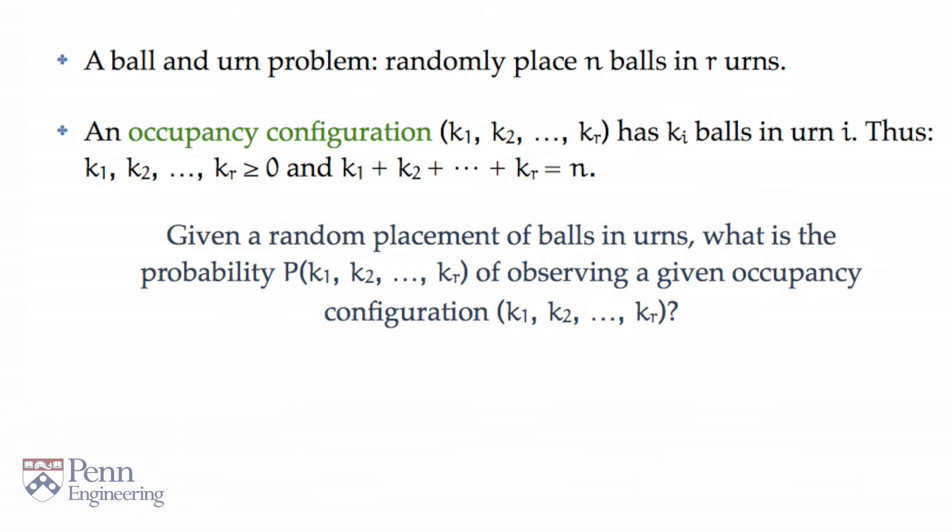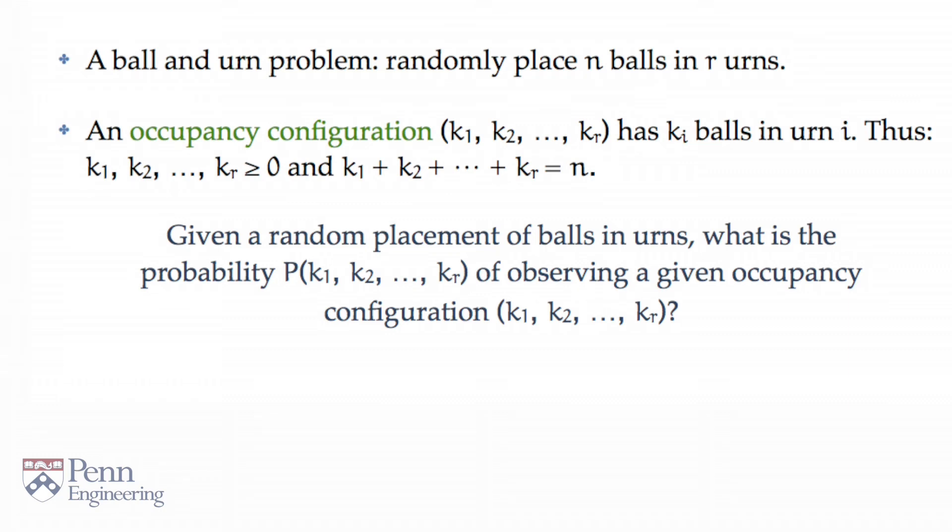So, given a random placement of n balls, n particles, into r urns, r states, and given a particular occupancy configuration of interest to us, say, a particular sequence k₁, k₂, k₃, through k sub r, what are the chances? What is the probability P(k₁, k₂, ..., kᵣ) that you observe that particular occupancy configuration?